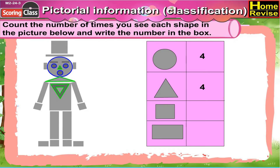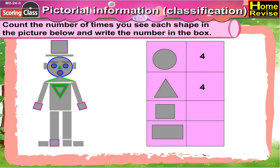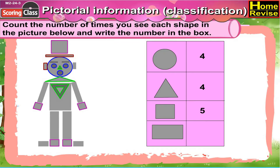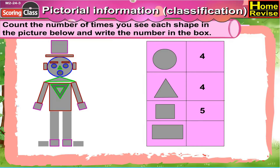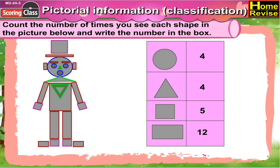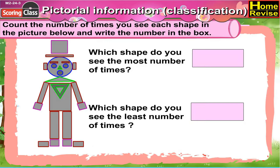Squares — one, two, three, four, five. There are five squares. Now the rectangles — one, two, three, four, five, six, seven, eight, nine, ten, eleven, twelve. There are twelve rectangles in all. Which shape do you see the most number of times?